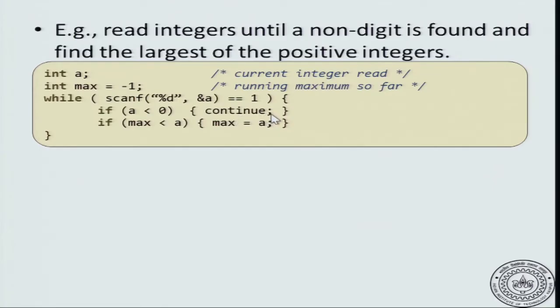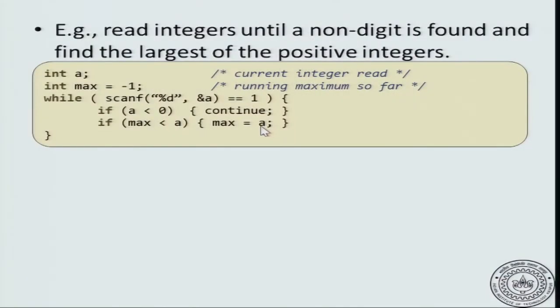If the currently read number is non-negative, what you will check whether the current maximum is less than the new number. If it is less than the new number, you reset the maximum to the new number. This is the code that we have written similar to other codes that we have seen.